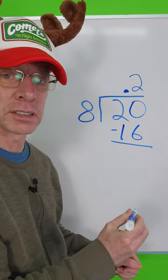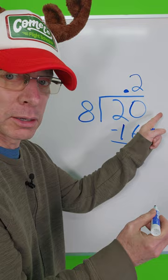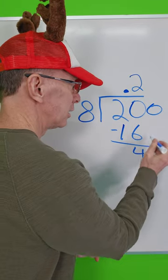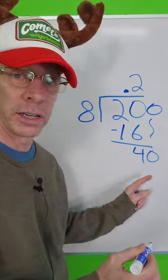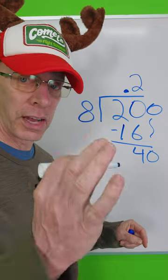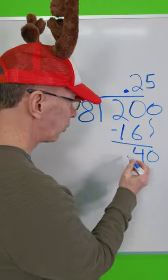I can put another zero down, so I put a zero here. 40. How many times does 8 go into 40? 5 times. Put the 5 right there. 5 times 8 is 40. Subtract: 0.